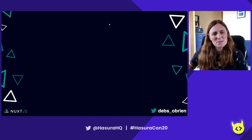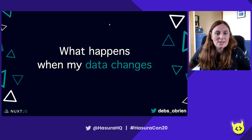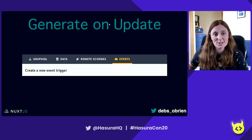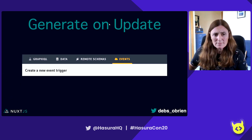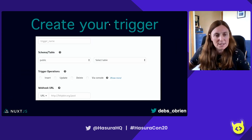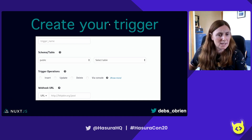But what happens when my data changes? Because I speak at a lot of conferences, data is changing all the time. Well, with Hasura you can generate on update - you create an event trigger. You go to the events tab and create a new event trigger. You put in your trigger name, like 'update workshops' or 'update conferences', choose the table, and choose what operation you want: insert, update, delete, et cetera.